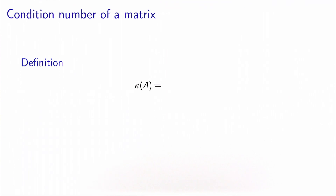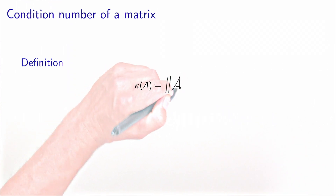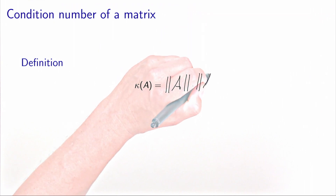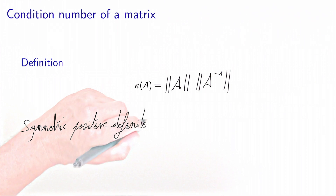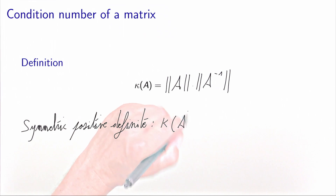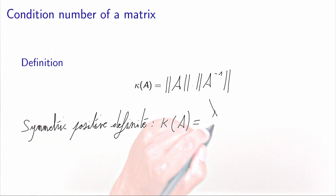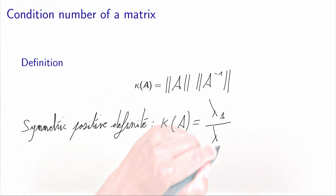We first start with the definition of the condition number of a matrix, which comes from linear algebra. The condition number of a matrix A is the norm of A multiplied by the norm of the inverse of A, if this inverse exists. And when the matrix is symmetric positive definite, the condition number κ(A) is actually equal to the ratio between the largest and the smallest eigenvalues. That's the way the condition number of a matrix is defined in linear algebra.